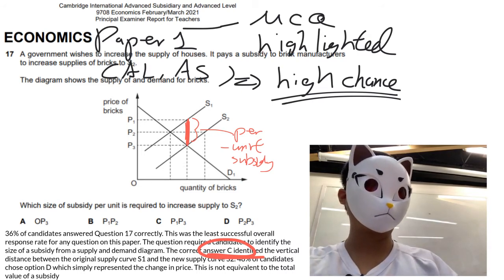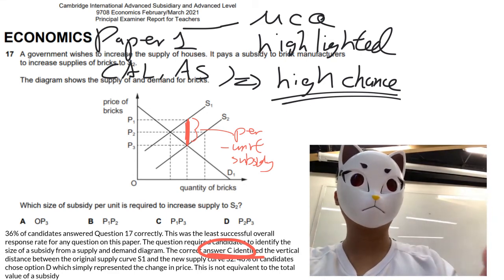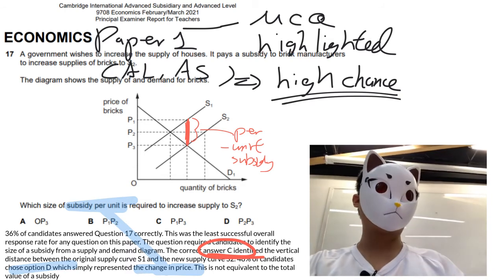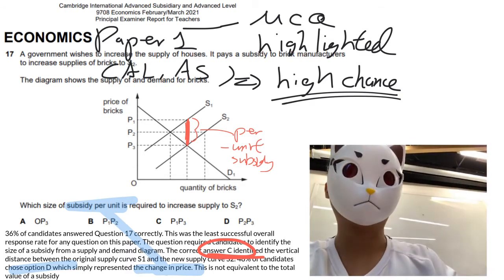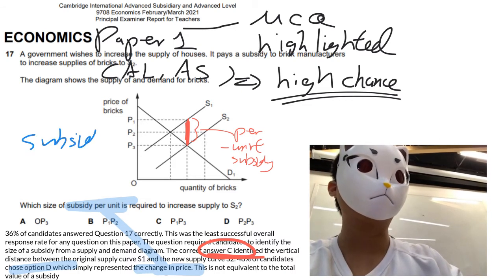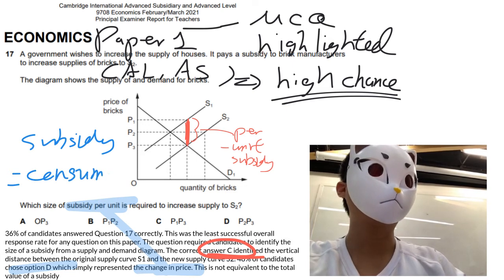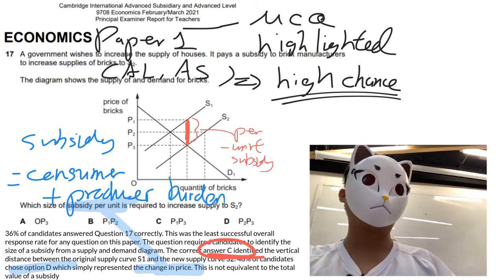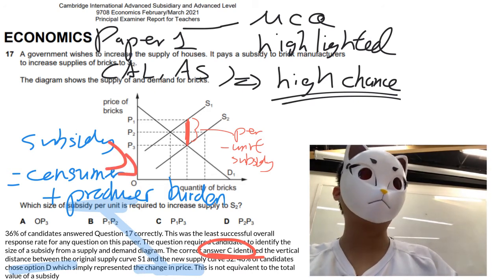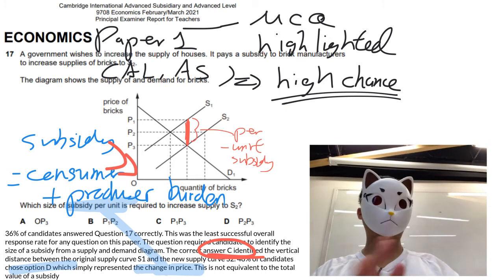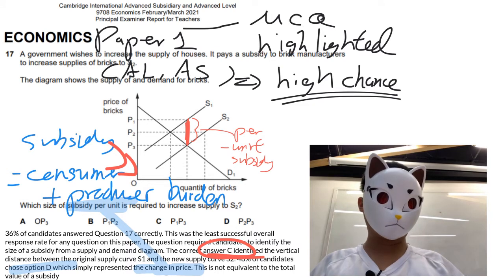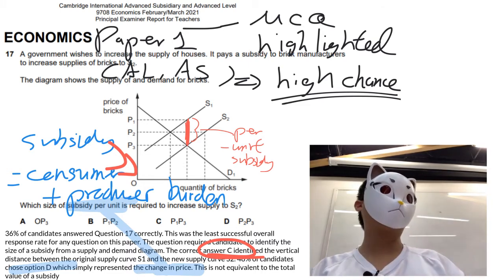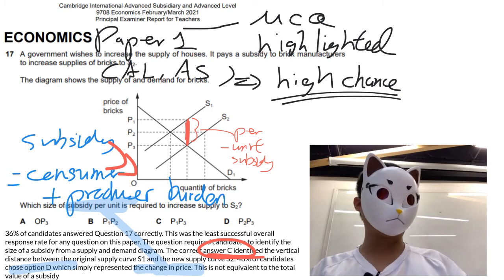Very easy, but still a lot of candidates make a mistake. They pick option D because they think that the change in price would equal to the per unit subsidy, which is wrong. Think about it — the subsidy per unit equals the consumer burden plus the producer burden. That's why, in the usual case, the per unit subsidy should be greater than the change in price, unless there are extreme cases. Otherwise, the per unit subsidy must be greater than the change in price. If you get this question wrong, you might not fully understand this topic.